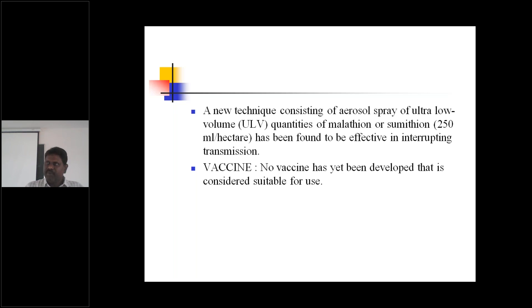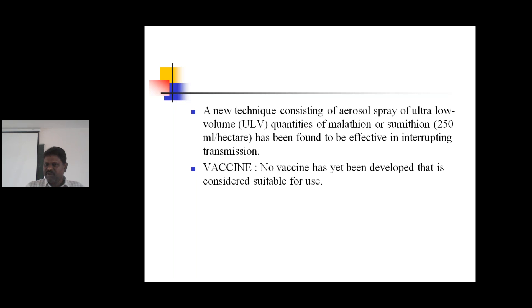Apart from using Abate as a larvicide, to control the mosquito vector population, they are spraying the aerosol spray with Malathion or Sumithion at 250 ml per hectare. When they spray this, the mosquitoes will be destroyed and killed, and the chances of transmission will be reduced.